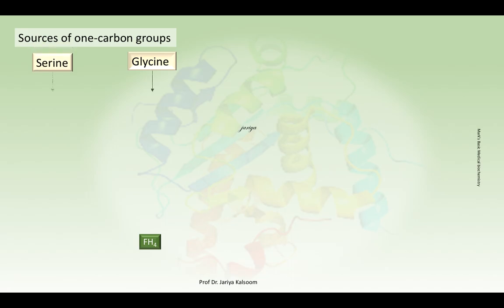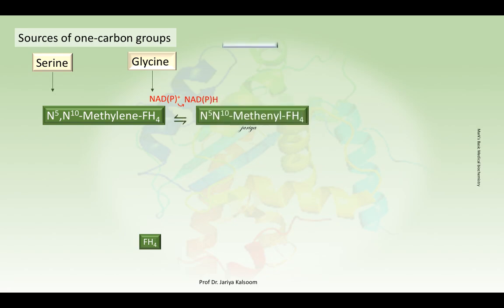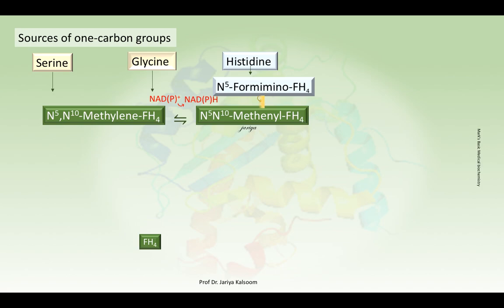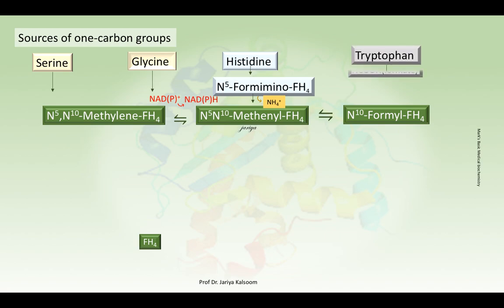Regarding the sources of one-carbon groups: serine and glycine contribute the methylene group to the one-carbon pool, histidine contributes its methenyl group, whereas tryptophan is the contributor of the formyl group. Here we can see the contribution of the methenyl group by histidine and the contribution of the formyl group by tryptophan.